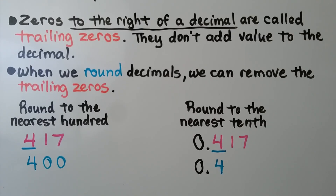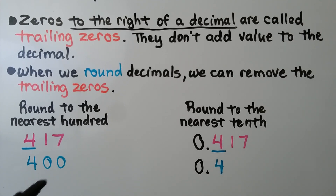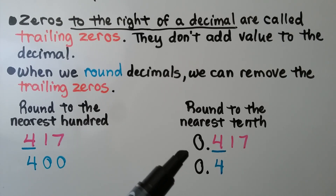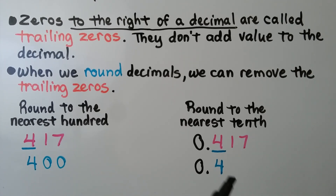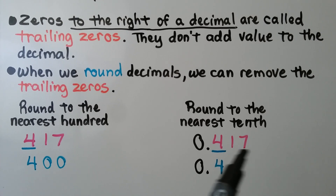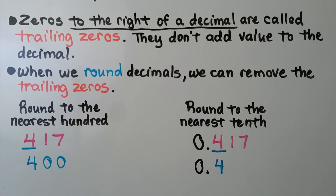Zeros to the right of a decimal are called trailing zeros. They don't add value to the decimal. When we round decimals, we can remove the trailing zeros. So when we were rounding to the nearest hundred for the whole number, we needed the zeros to keep the four in the hundreds place. If we are rounding 417 thousandths to the nearest tenth place, we can drop off the trailing zeros and write 4 tenths. The one in the hundredths place told the four to stay the same, and they became zeros, and we can drop off those trailing zeros and just write 4 tenths.